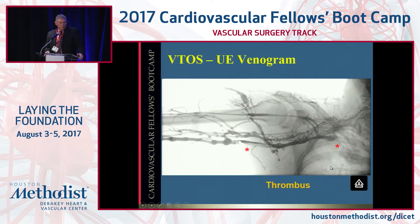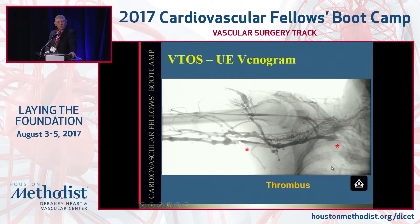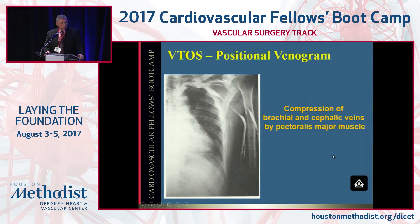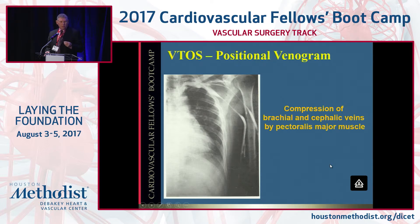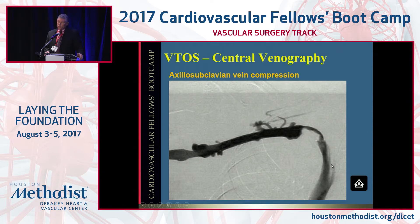For venous TOS, sometimes you have to do an upper extremity retrograde venogram. You can cannulate the basilic vein, which is better than the cephalic — because with the cephalic, you'll miss the basilic and the brachial — or you can use ultrasound-guided access of the brachial vein and shoot your venogram. Here it shows thrombus in two areas. You can do a positional venogram: if somebody has symptoms worrisome for VTOS but it's not showing on venogram, change the position of the arm. Here, compressing the arm against the side, you can see the cephalic and brachial veins are compressed by the pectoralis major muscle. Here's an axillo-subclavian vein compression without thrombus in somebody who presented with arm swelling.